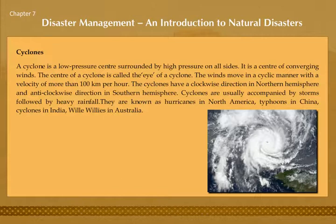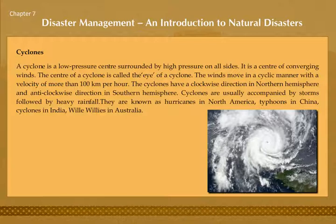A cyclone is a low-pressure center surrounded by high pressure on all sides. It is a center of converging winds. The center of a cyclone is called the eye of the cyclone. The winds move in a cyclic manner with a velocity of more than 100 km per hour. Cyclones have a clockwise direction in the northern hemisphere and an anti-clockwise direction in the southern hemisphere.